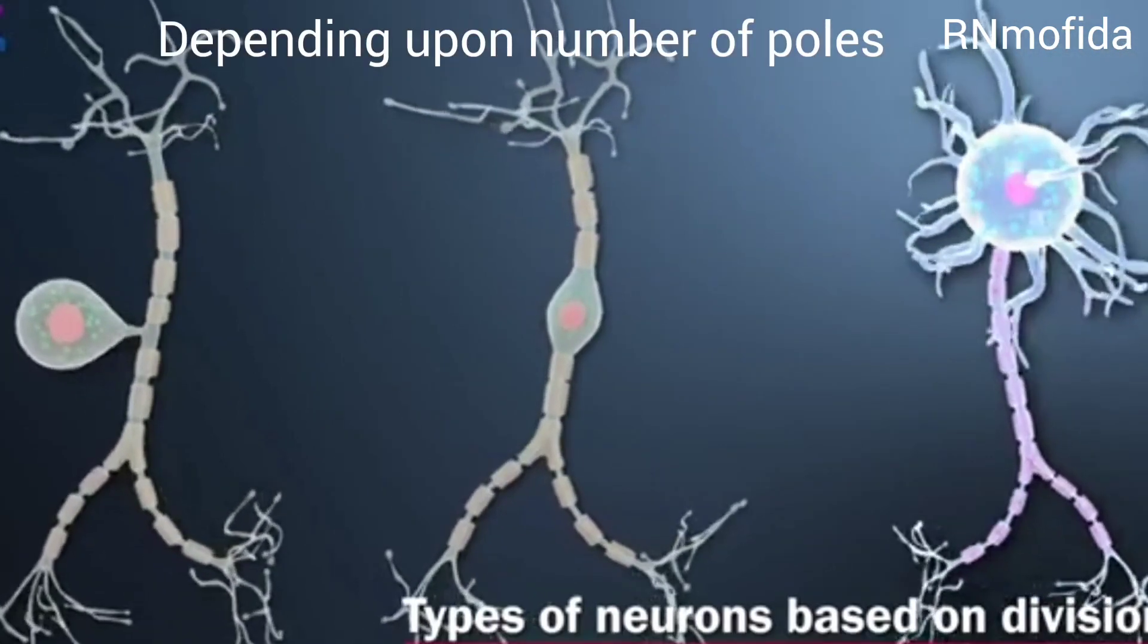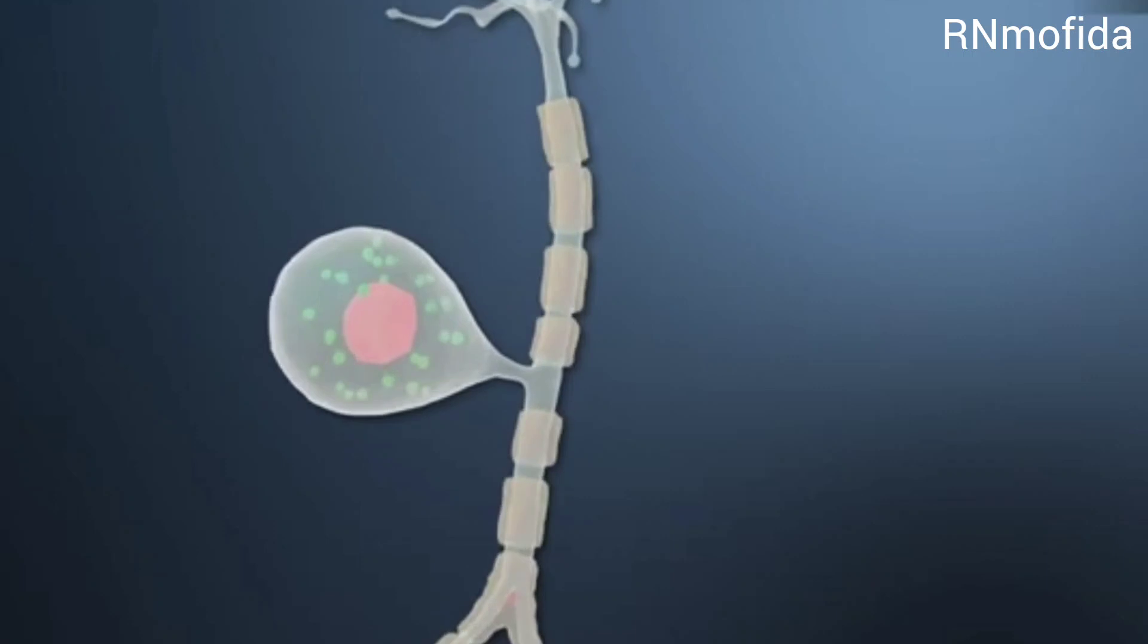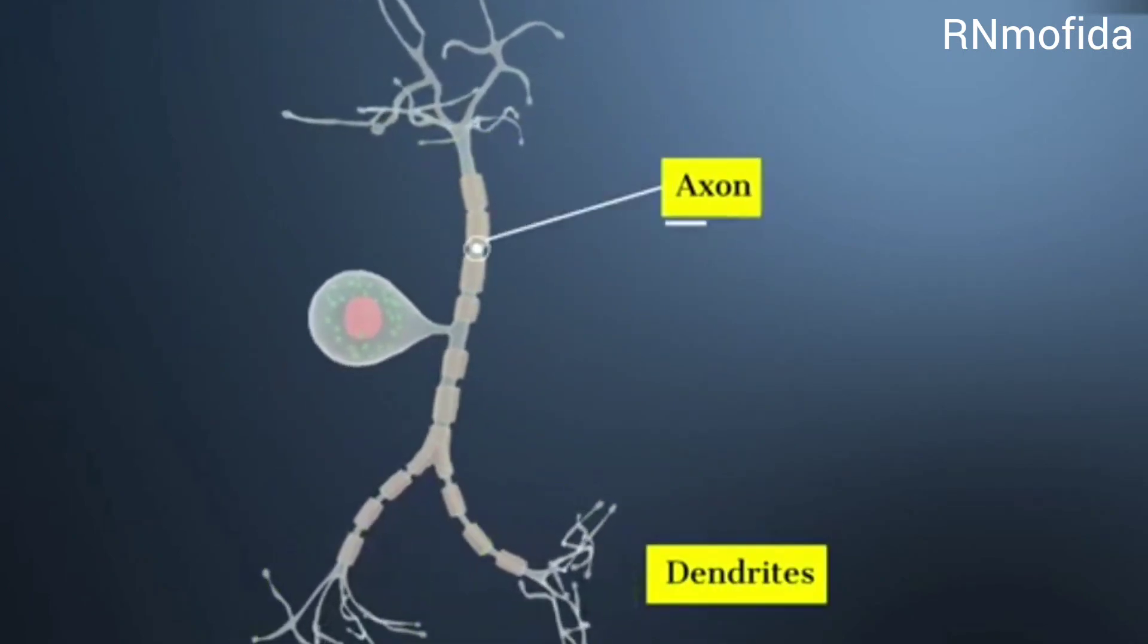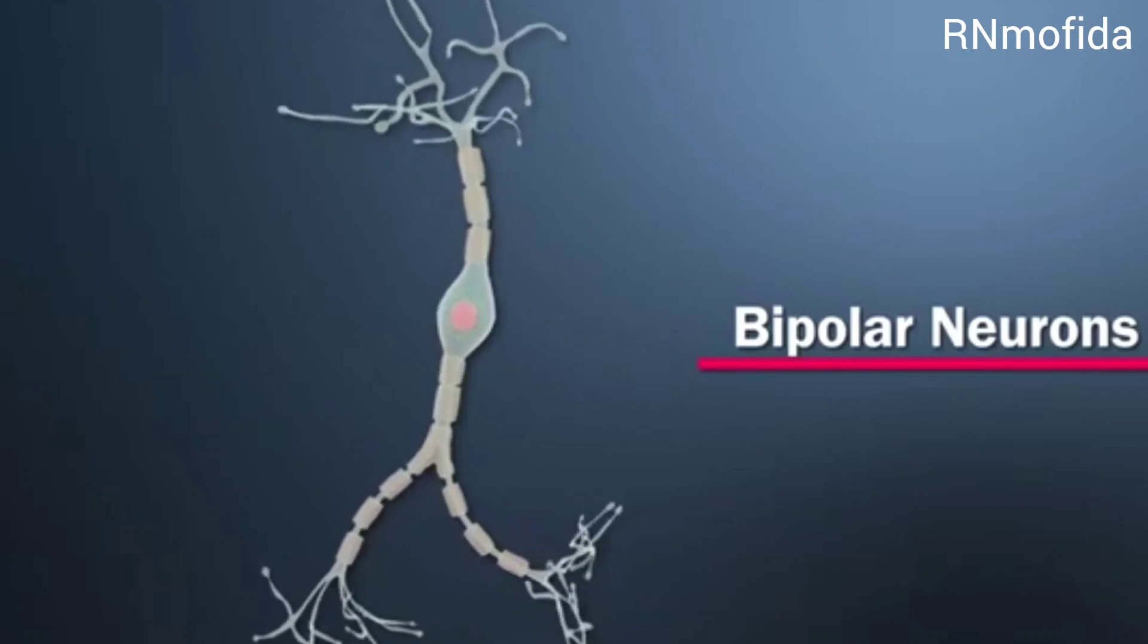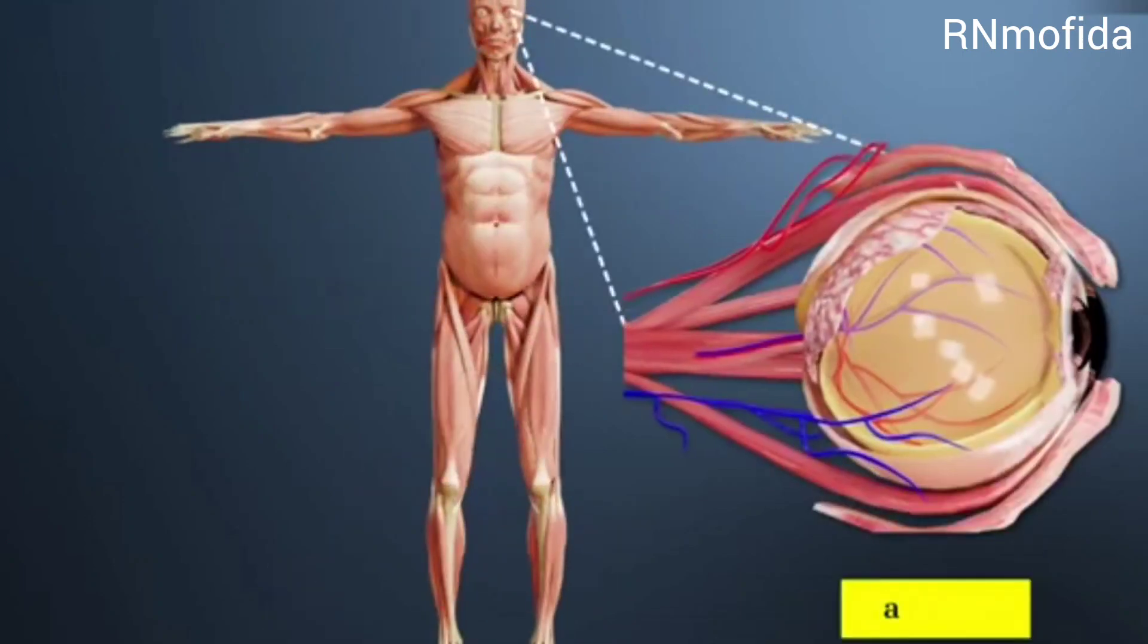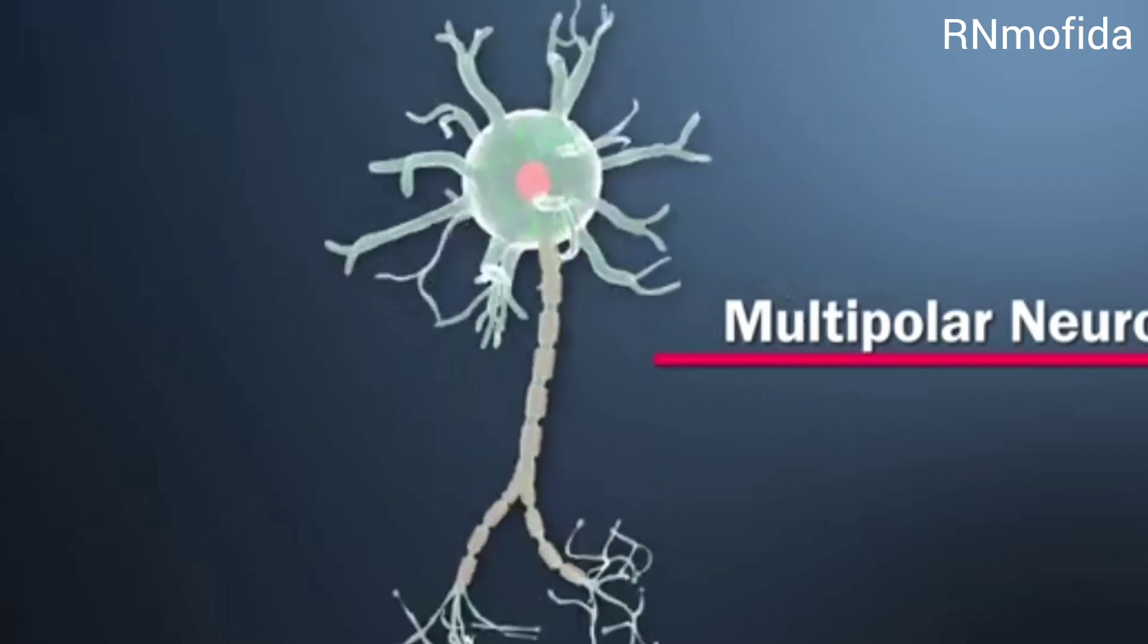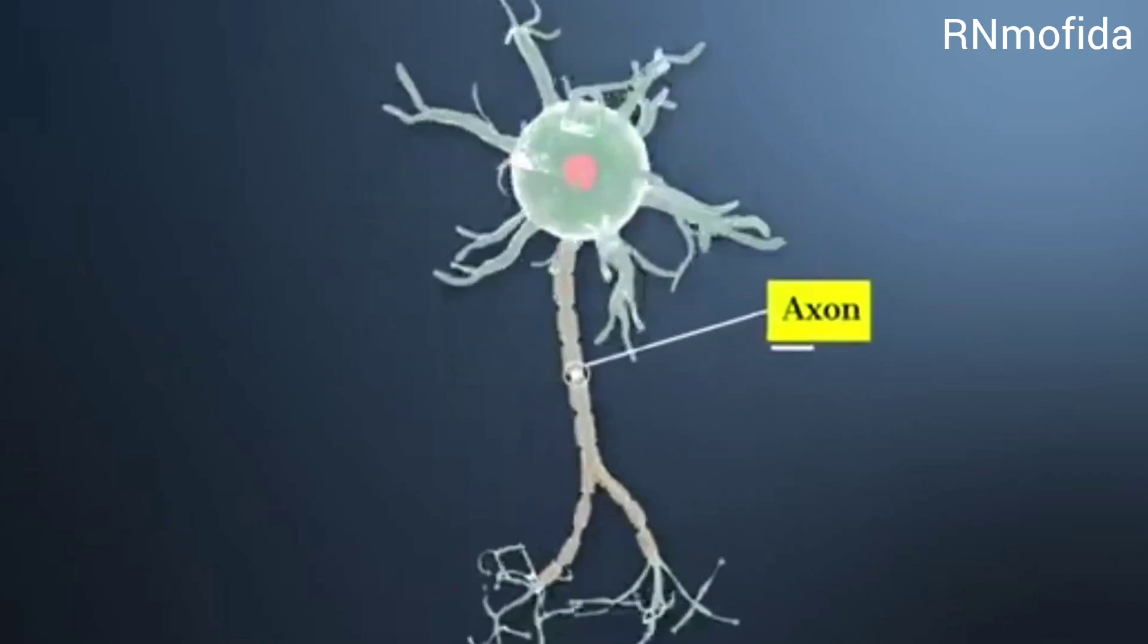Classification of neurons: depending upon the number of poles, there are three types. First is unipolar nerve cells, in which the cell body has only one pole from which both axon and dendrites arise. These are known as pseudo-unipolar neurons. Second are bipolar neurons, which have two poles. Axons arise from one pole and dendrites arise from the other pole. These are present in the eye retina and in our ear called olfactory sensory epithelium. Third is multipolar neurons, which have many poles. One pole gives rise to the axon and all other poles give rise to the dendrites. Most neurons in our body are multipolar neurons.